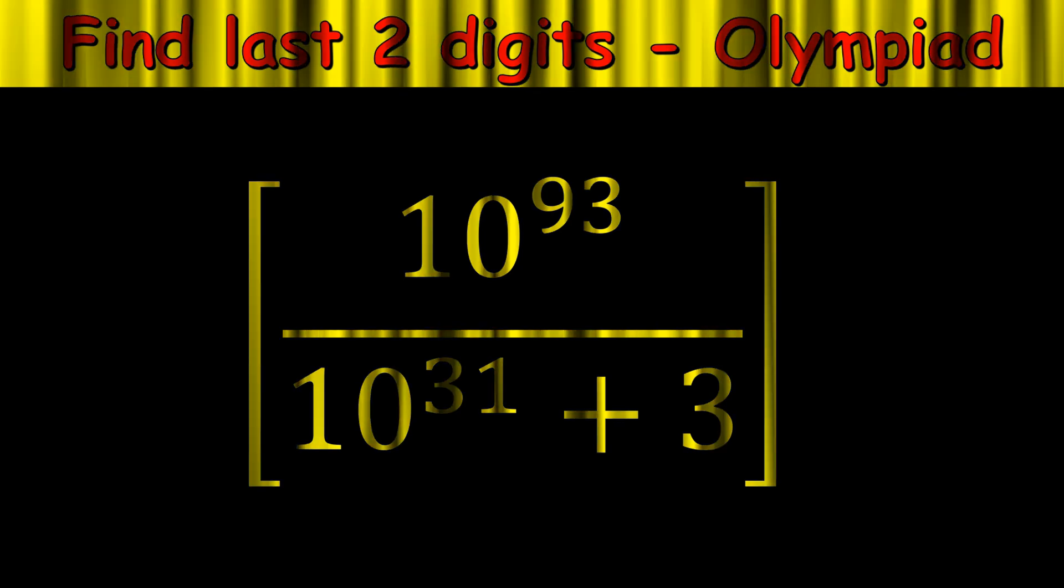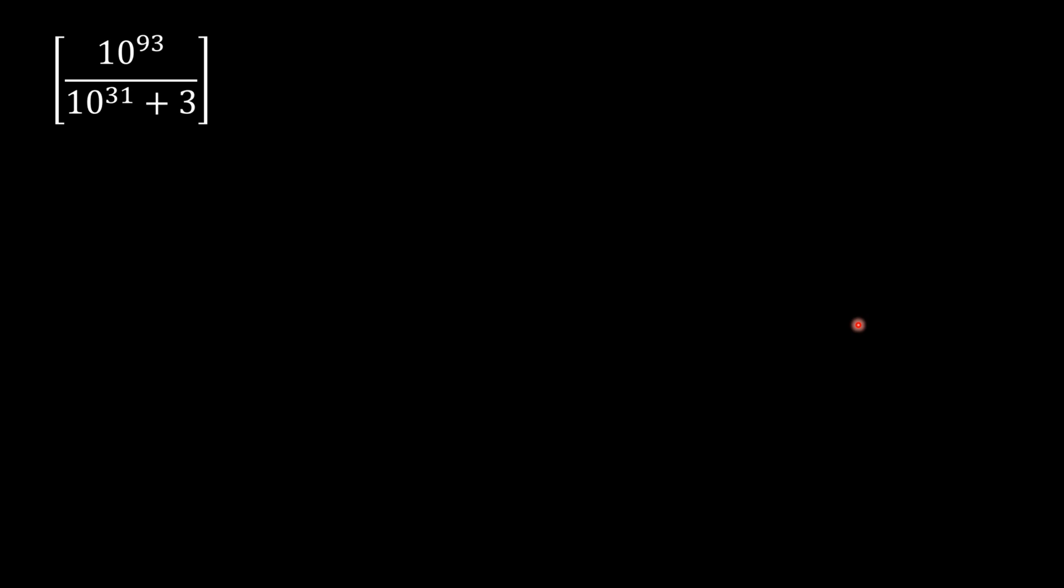Now let's see the solution. It's easier to assign some variable to this big number. If you see here, this 31 and this 93—this 93 is 3 times 31.